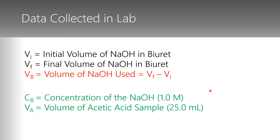The data for this laboratory is pretty straightforward. At the bottom in green, you've got two known values. Whenever you do a titration, you're using a known material to determine the properties of an unknown material. We're using NaOH to titrate vinegar, which is a solution of acetic acid. So we need to know the concentration of the NaOH — the sodium hydroxide is at 1.0 molar.